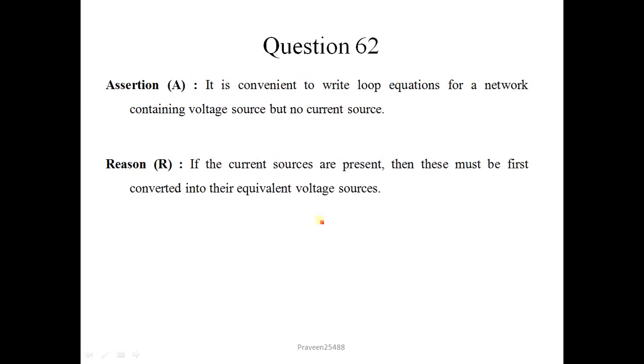Next question is 62. It is convenient to write loop equations for a network containing voltage source but no current source. Basically we write loop equations using KVL law, so voltage source is important. This statement is correct. If the current sources are present then these must be first converted into their equivalent voltage source. This is justified to the assertion. Correct option is 1.